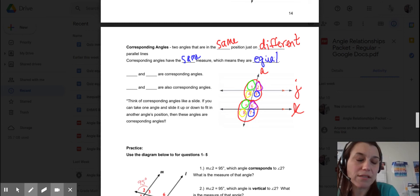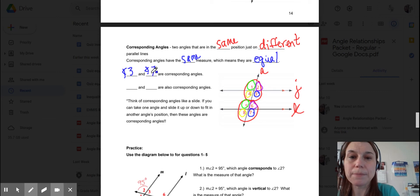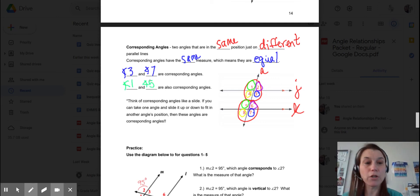So we can just list a couple examples like angle 3 and angle 7. I wrote 8. I'm sorry. Angle 7 are corresponding angles. So are angle 1 and angle 5. But there are four sets of corresponding angles. 1 goes with 5, and 2 goes with 6, and 3 goes with 7, and 4 goes with 8.